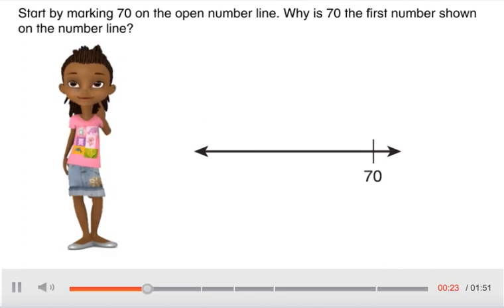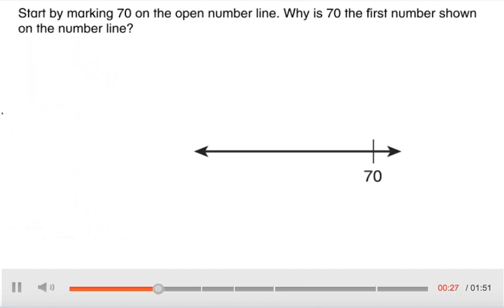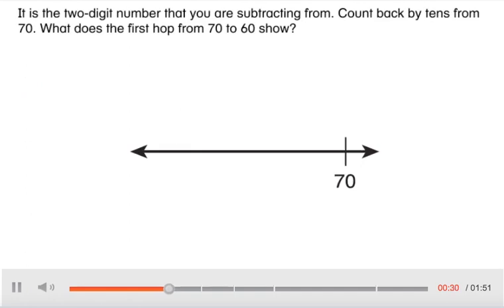Why is 70 the first number shown on the number line? It is the two-digit number that you are subtracting from.